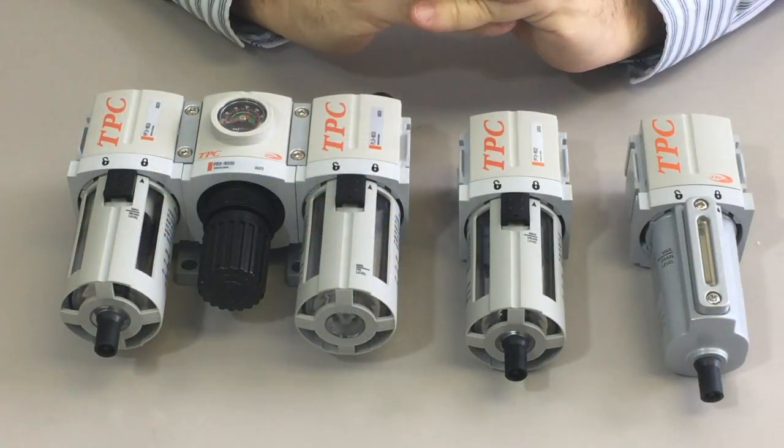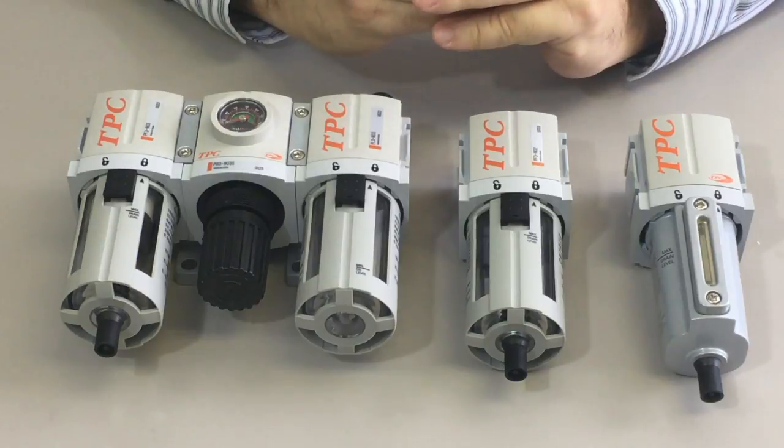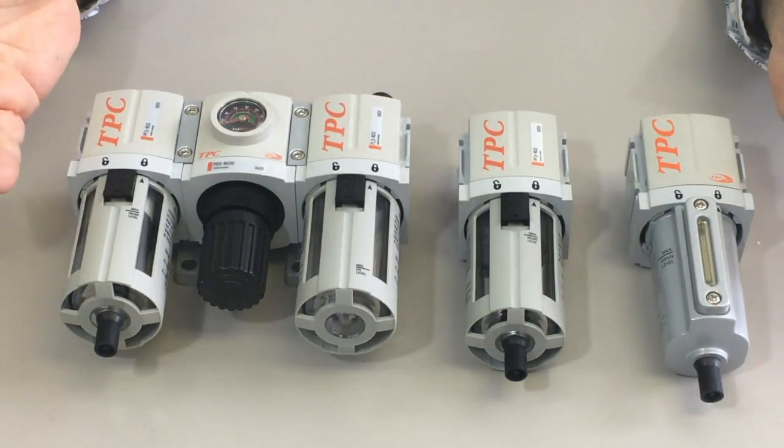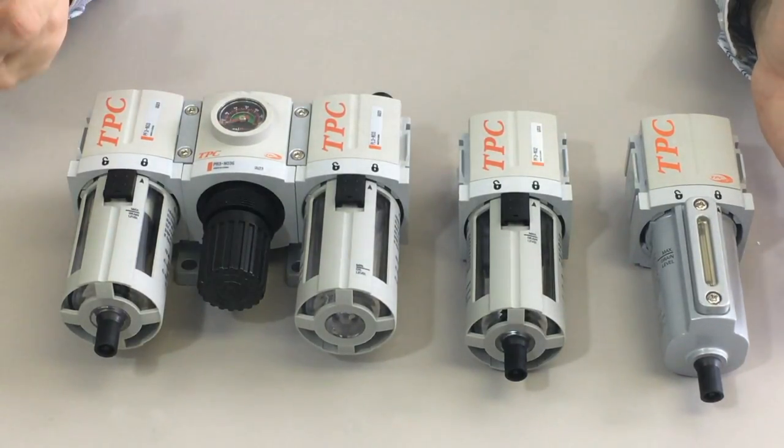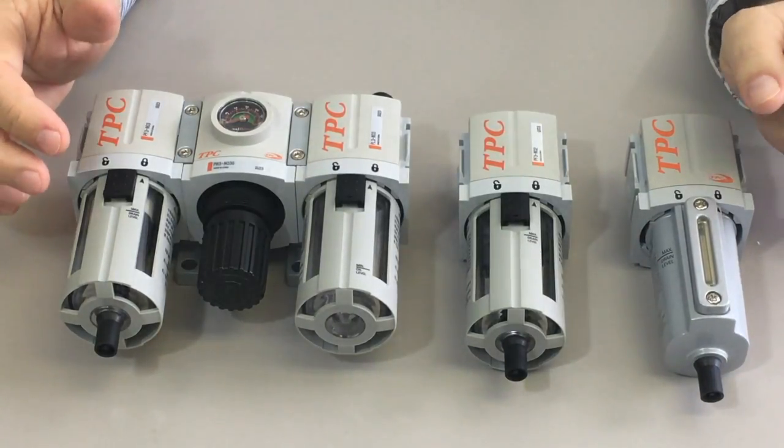So, our FRL, as we noted, stands for Filter, Regulator, and Lubricator, and this is our 3 Series, which is the next step up in body size from the miniature regulator and filters.